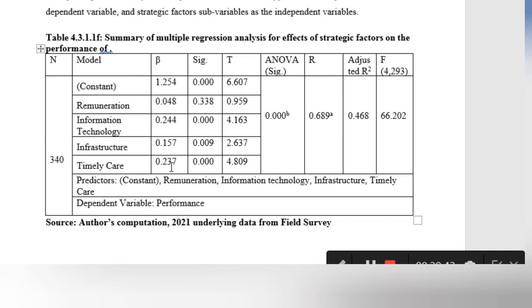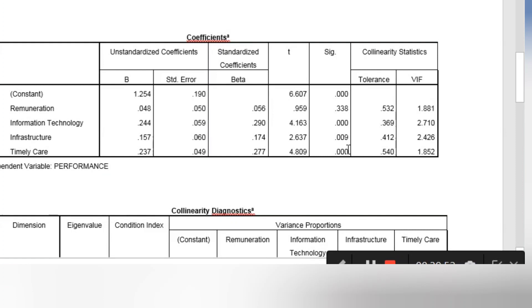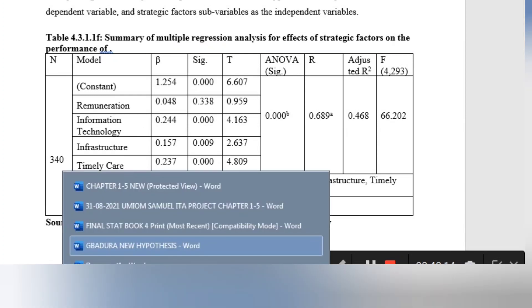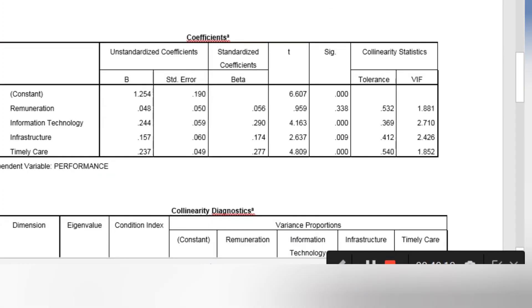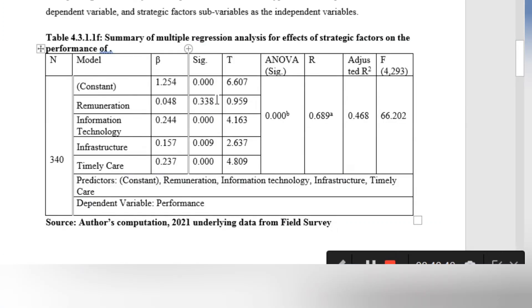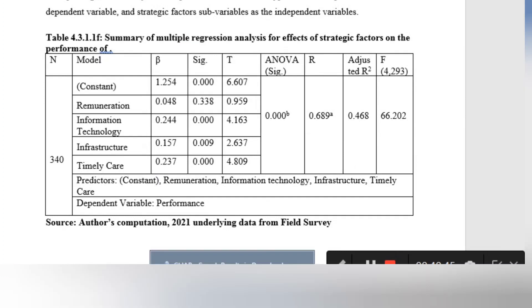We go to the significance values: 0.000 for your constant, 0.338, 0.000, 0.009, 0.000 — it's only remuneration that is not significant. You pick your T values under the coefficient table. From the coefficient table, you pick your beta, your T value, and your significance — that's all you need. Then you go to pick the overall significance from your ANOVA table.